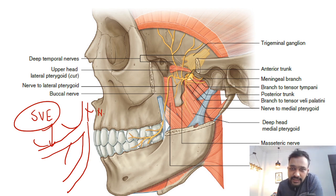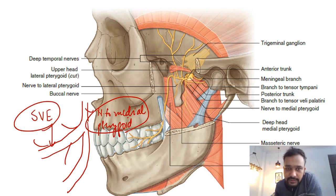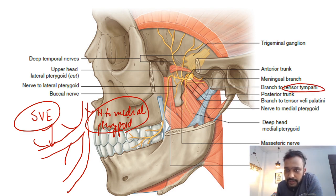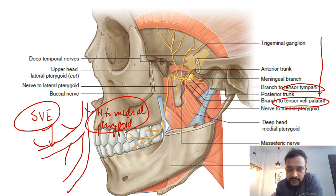The medial pterygoid is the only muscle of mastication supplied by the trunk. The nerve to medial pterygoid further gives two branches: a branch to the tensor tympani and a branch to the tensor veli palatini. The tensor veli palatini is the only muscle of the soft palate supplied by the mandibular nerve.